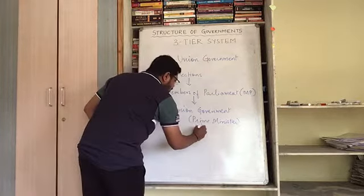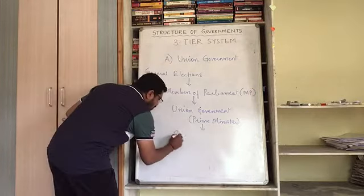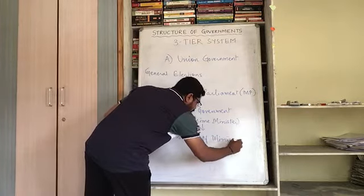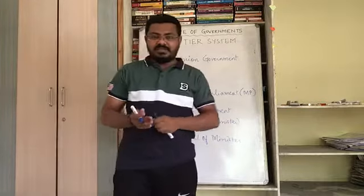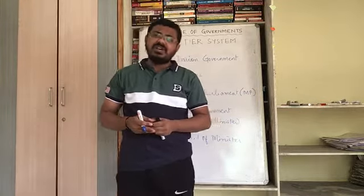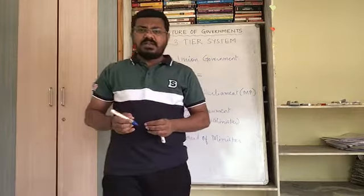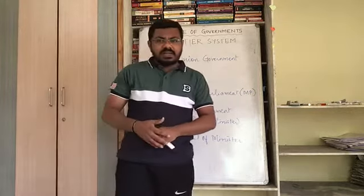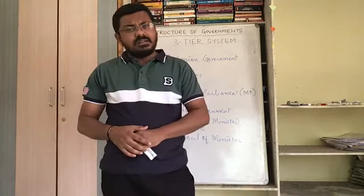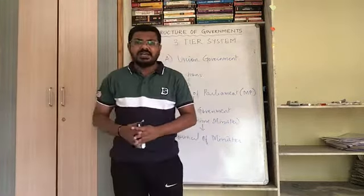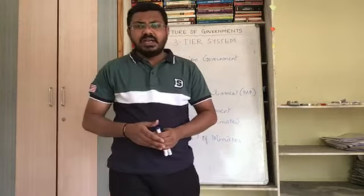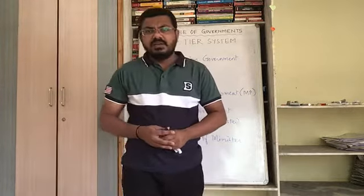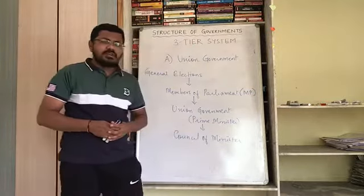The members of parliament form the union government, which is led by the prime minister. The prime minister along with the president will form the council of ministers. The council of ministers includes cabinet ministers, state ministers, and independent in-charge ministers. Those who do not receive a portfolio will support the government, while opposition members will question the functions and working of the government.